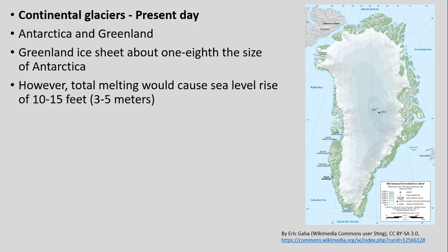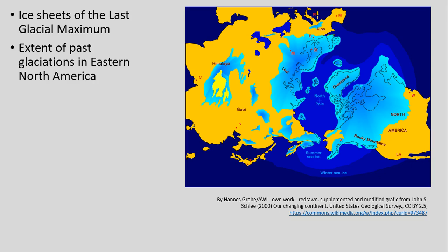The Greenland ice sheet is only about an eighth of the size of Antarctica, although even if it were to have almost total melting, it would still cause quite a bit of sea level rise — up to 10 to 15 feet or a few meters — which is pretty extensive and would inundate quite a lot of coastal areas. It does hold a lot of water stored up in these ice sheets.